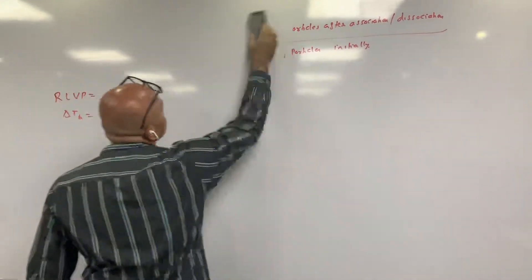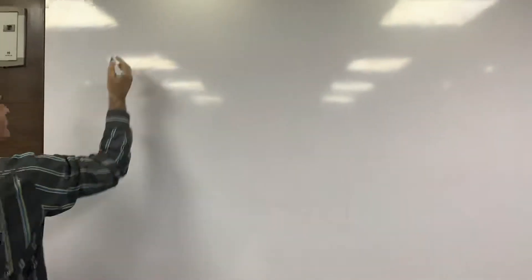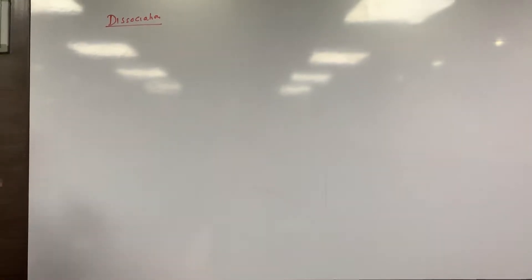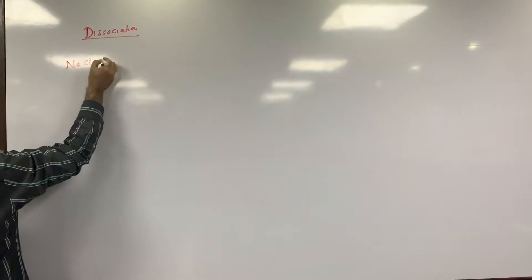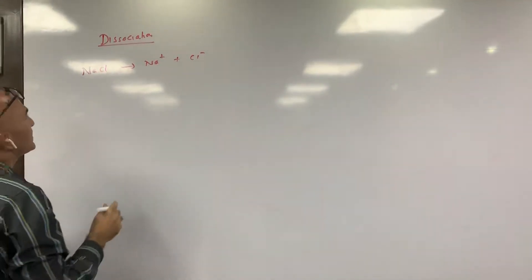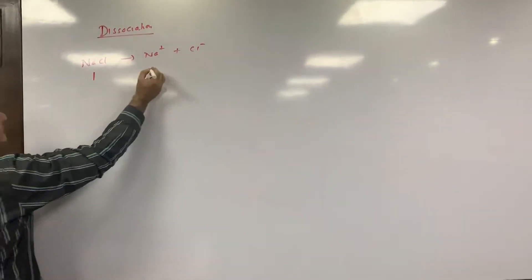First I will take dissociation. In dissociation, the molecules will dissociate once you put an electrolyte in solution — it will start dissociating and the number of particles will increase. For example, NaCl gives Na⁺ plus Cl⁻. This will completely dissociate, but suppose it is not completely dissociated; then the initial concentration is 1, and products start at 0.